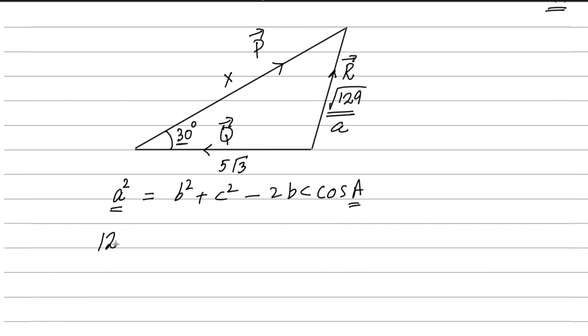So it will be root 129 square here, B is X squared plus C is 5 root 3 squared minus 2BC, X into 5 root 3 cosine 30 degrees.